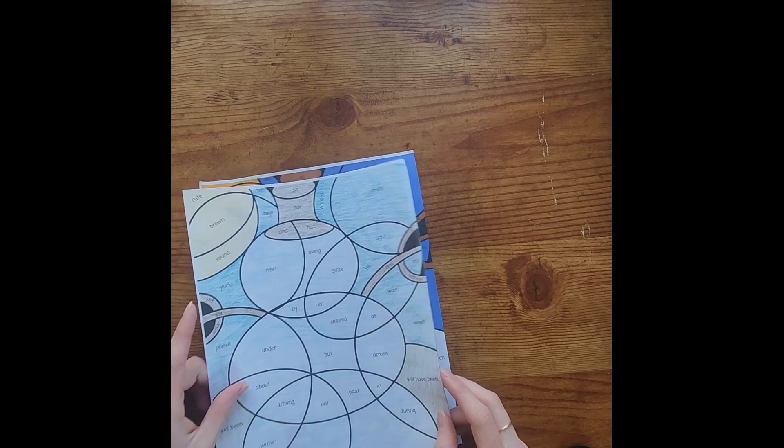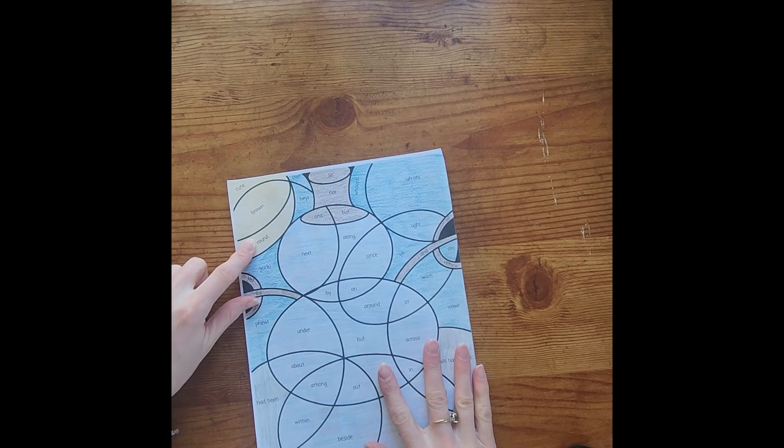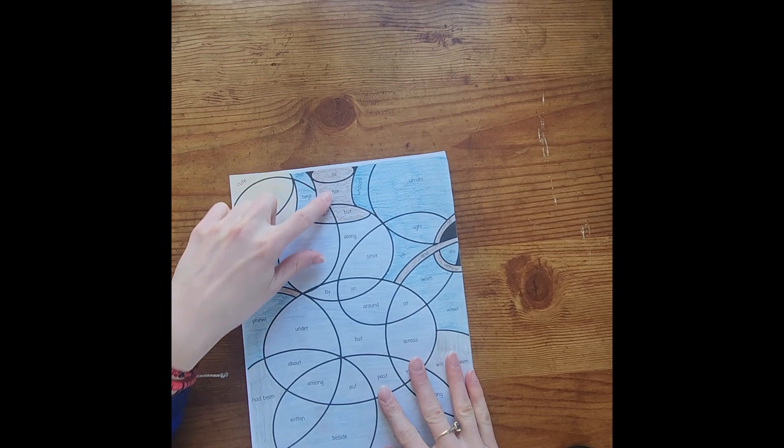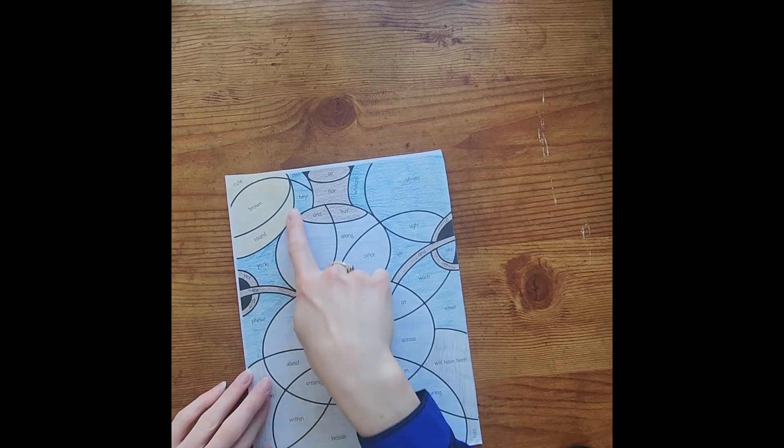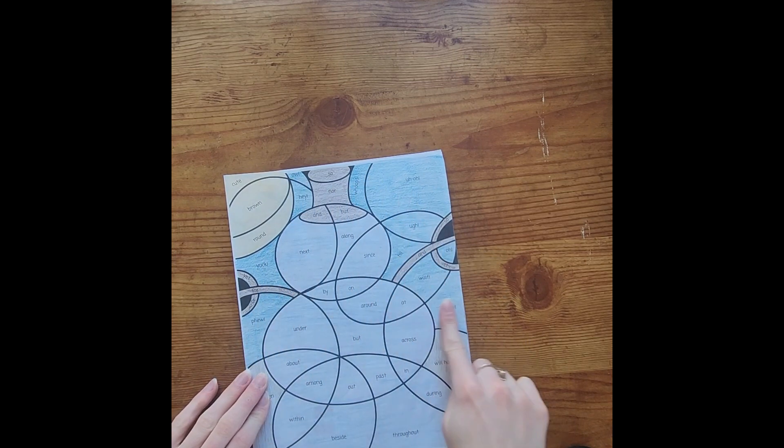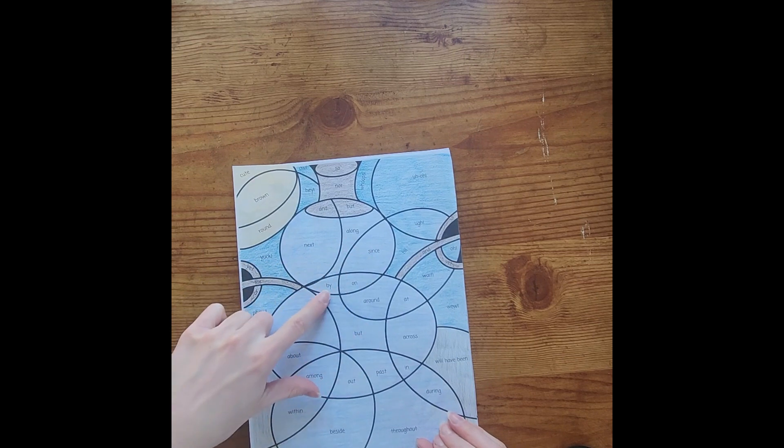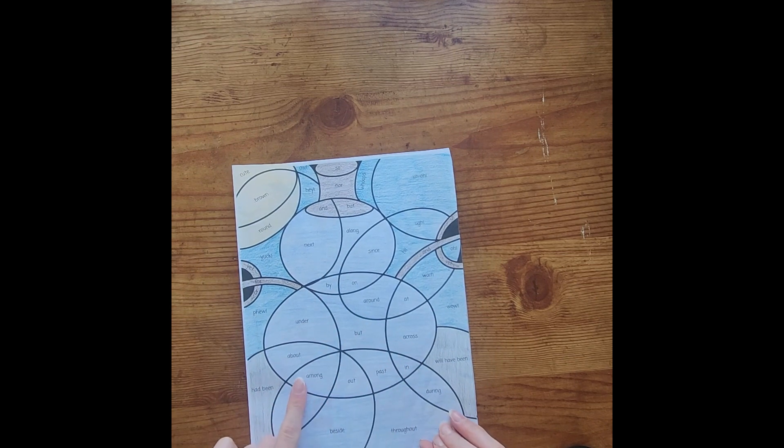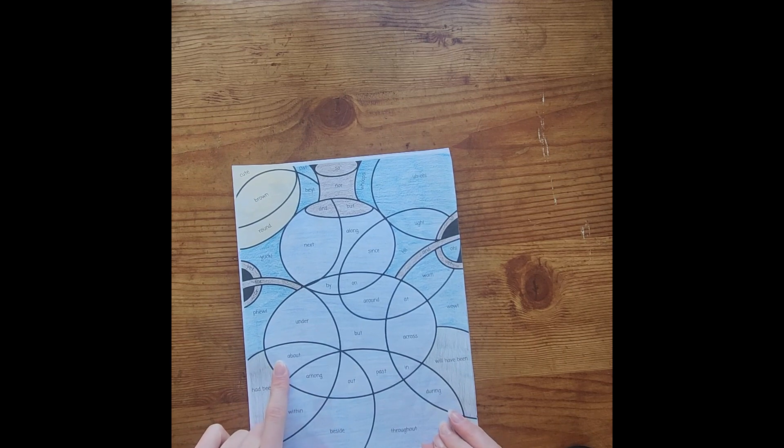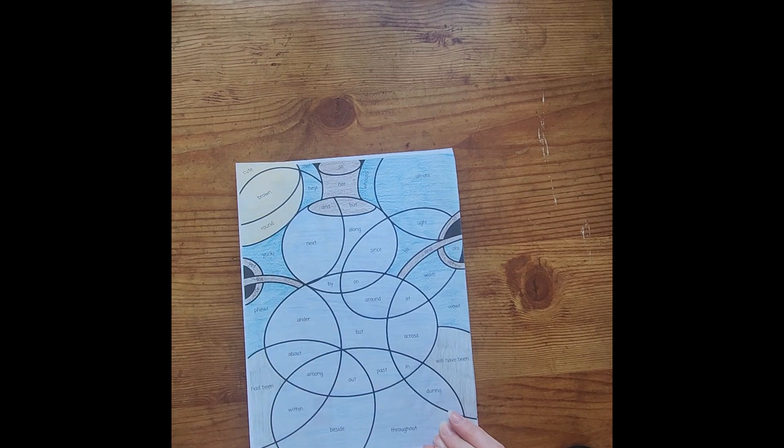And then you can see what it looks like if they were to finish it. So if your adjectives, you have cute, brown, round. Conjunctions: so, nor, and, but. That's all around. You see all the interjections that ended up being blue. And then the prepositions: next to, long, since, on, by, under, around, at, but, across, past, in, out, among, another, about, I don't know if I said that one already, but those, within, besides, throughout, during, those are all going to be light blue.